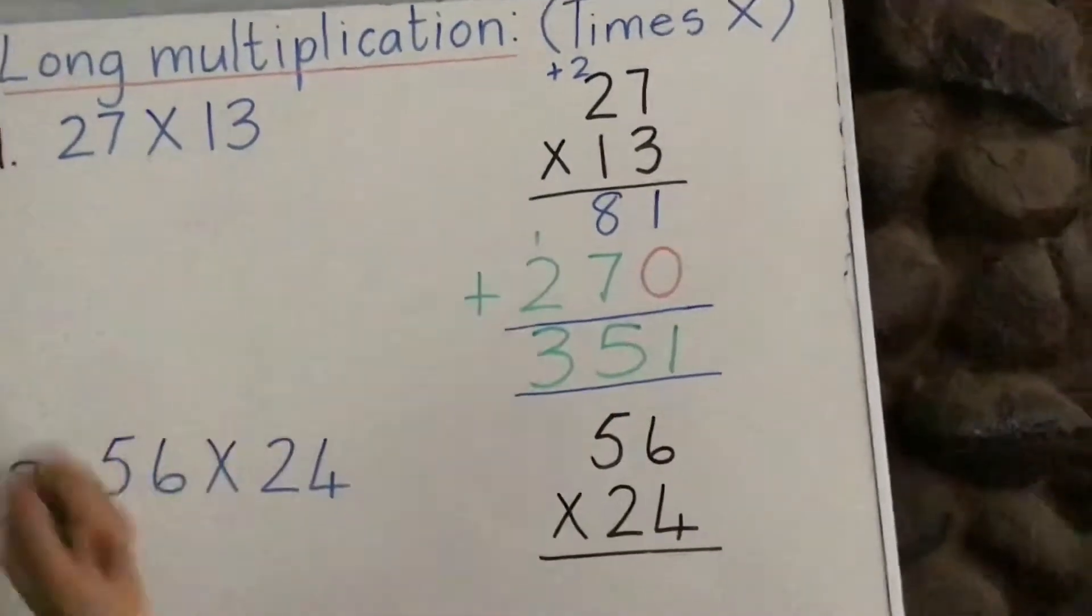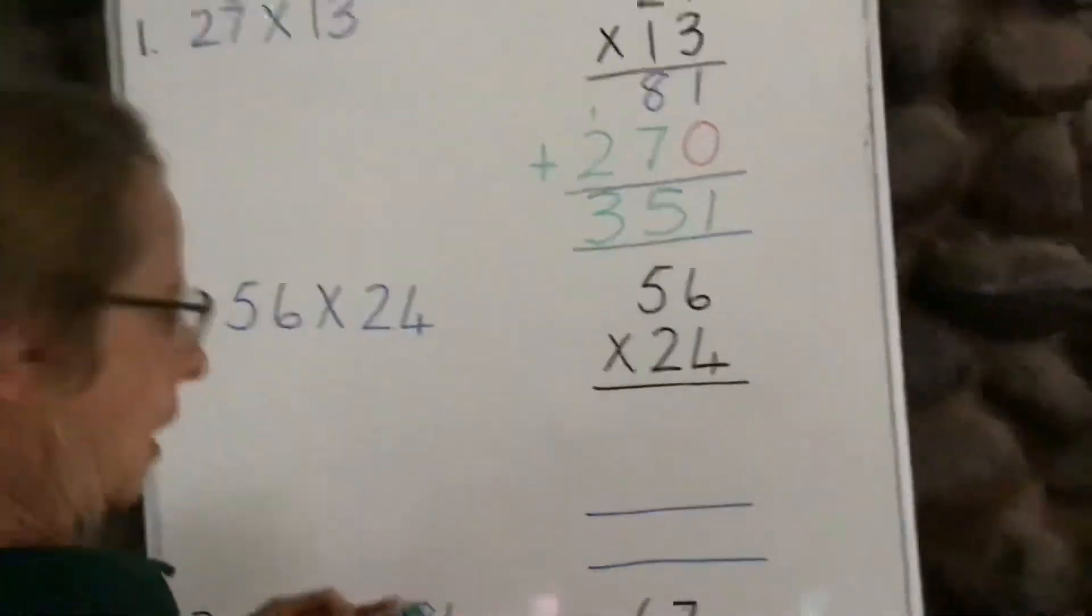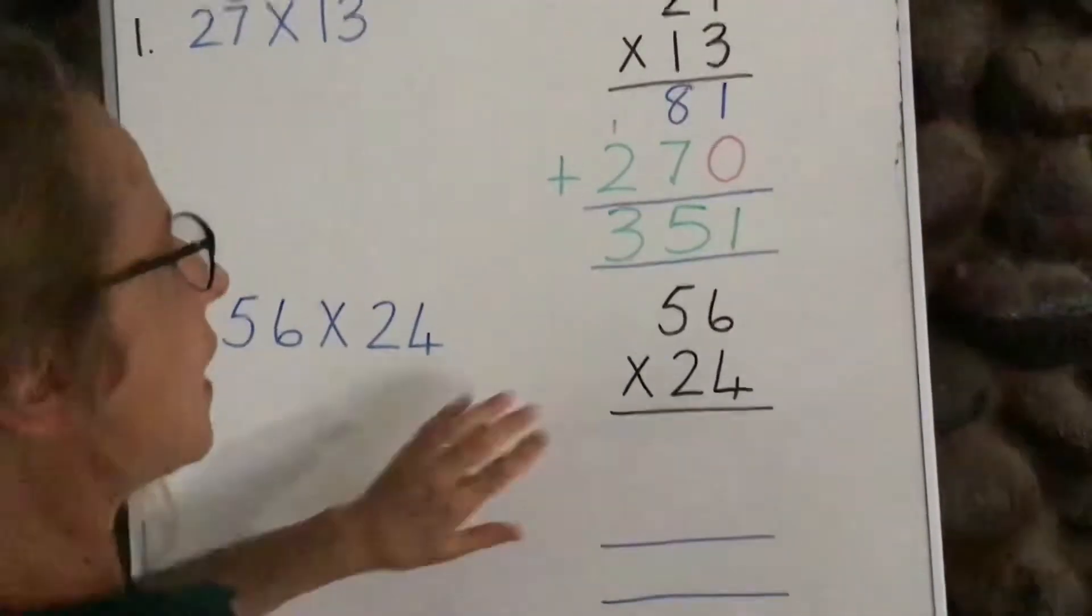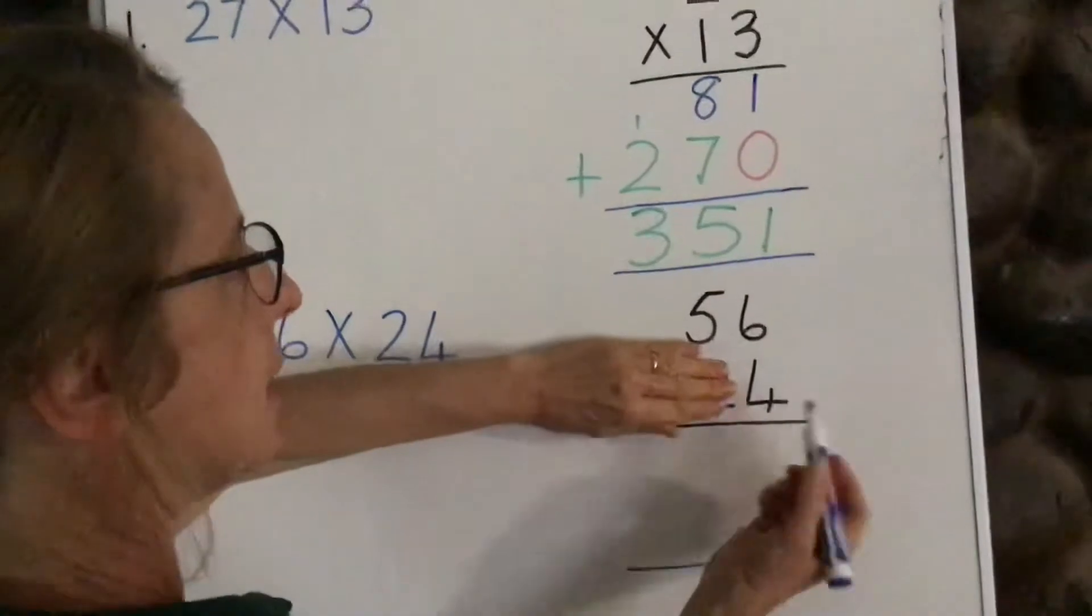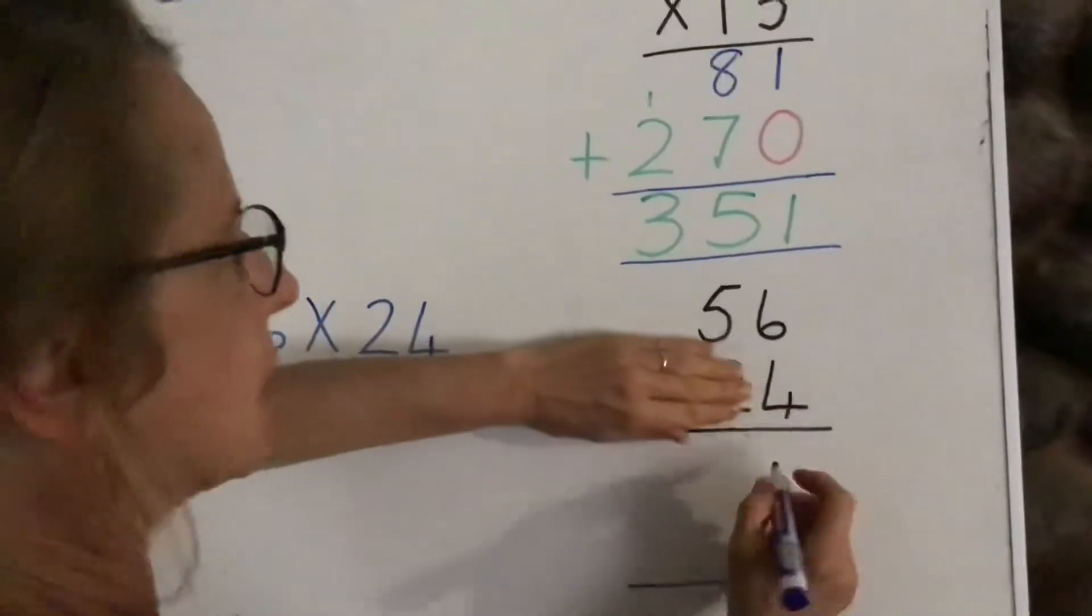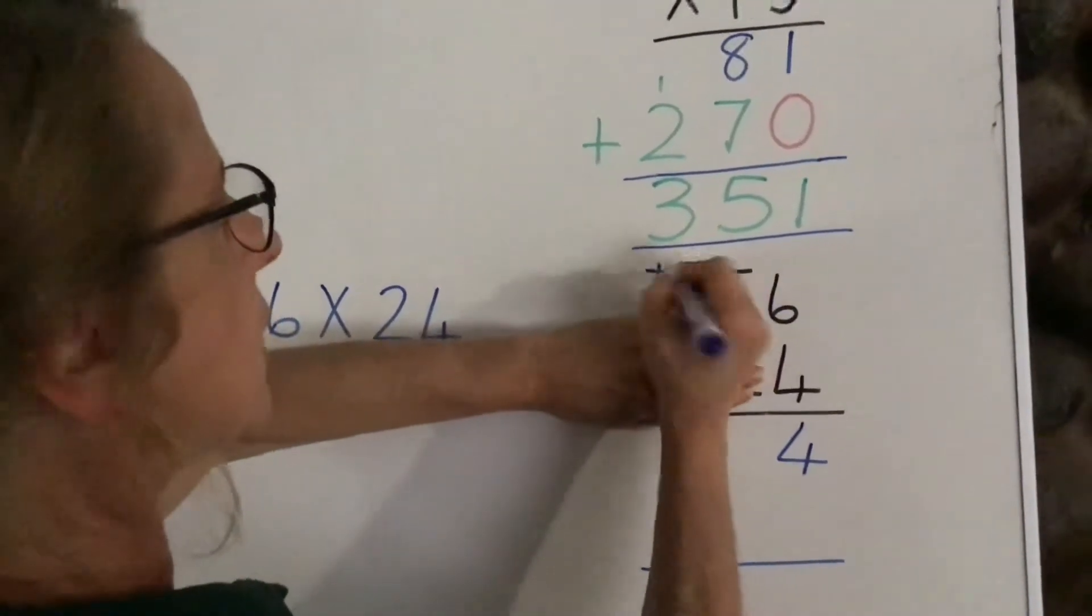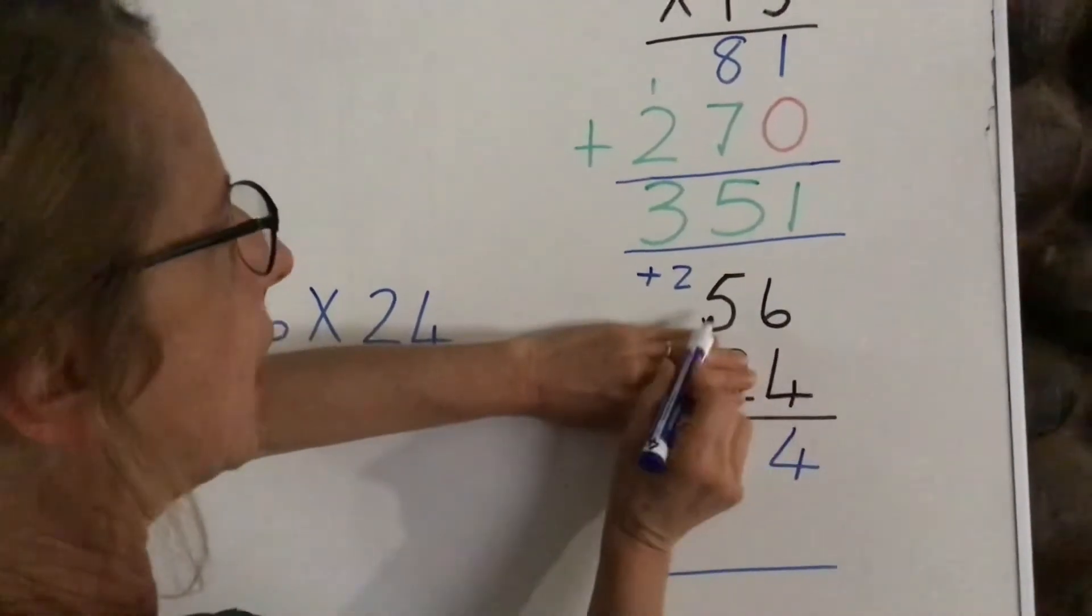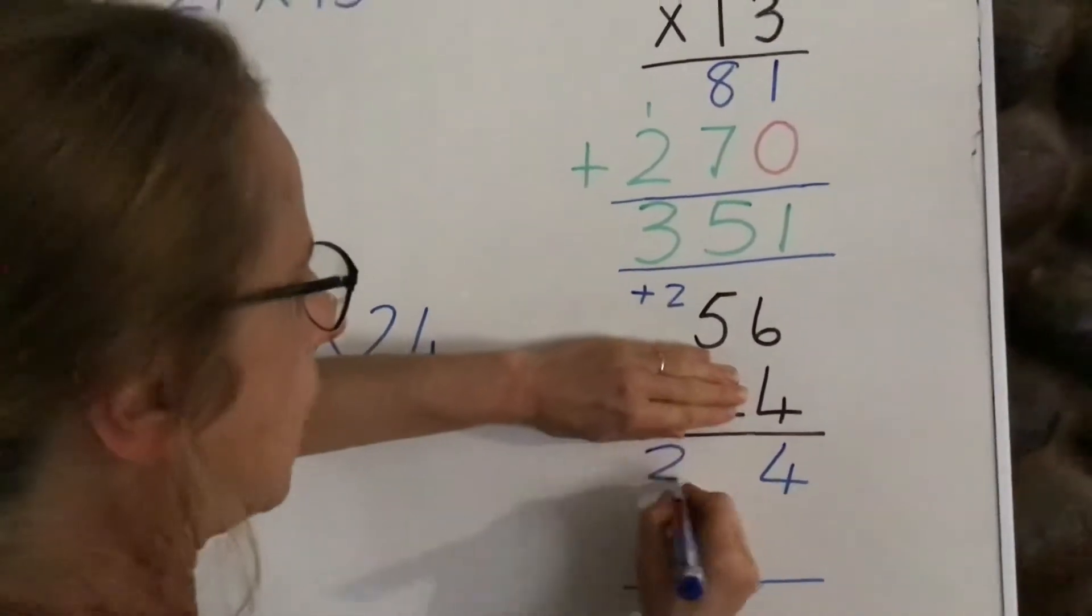Let's look at the second example. We say, again, we cover up our tens, and we say four times six is 24, and we carry that two. We say four times five is 20, plus the two is 22.